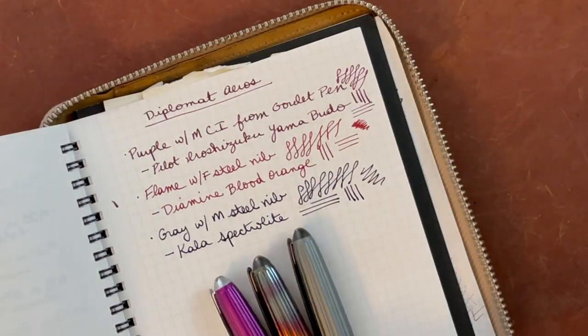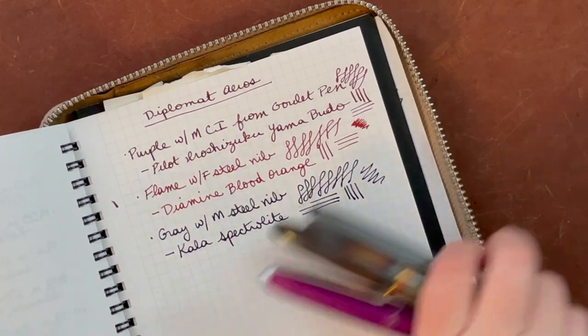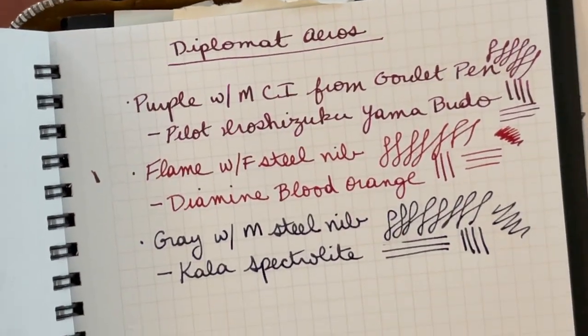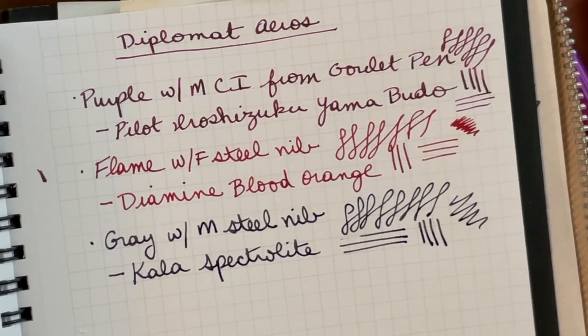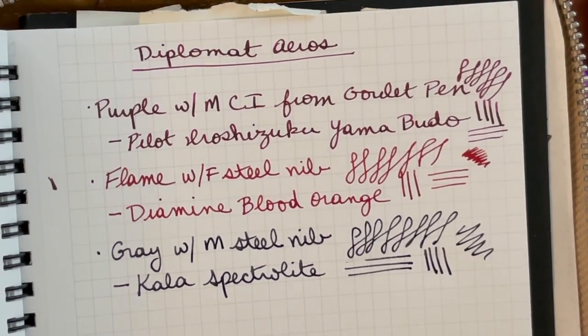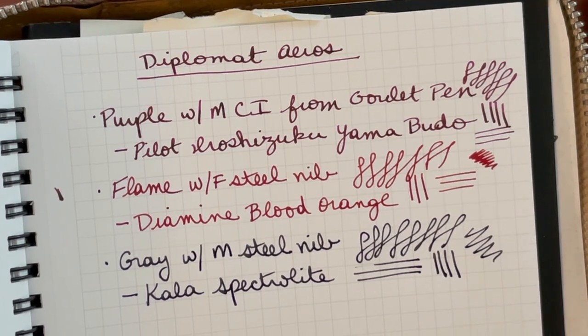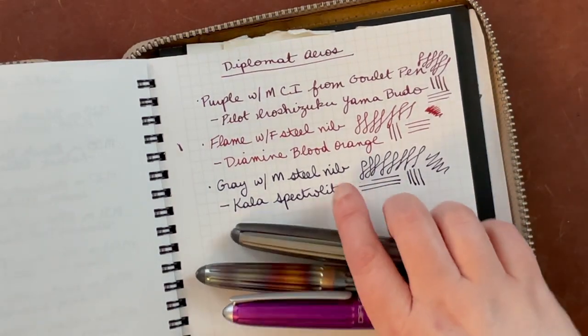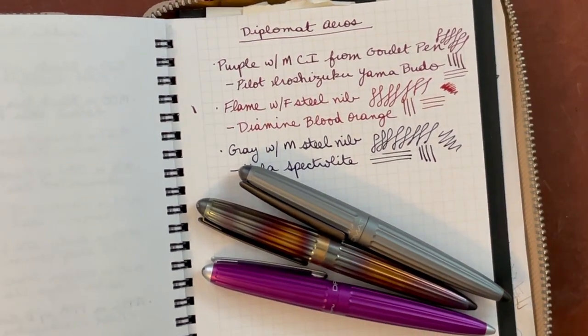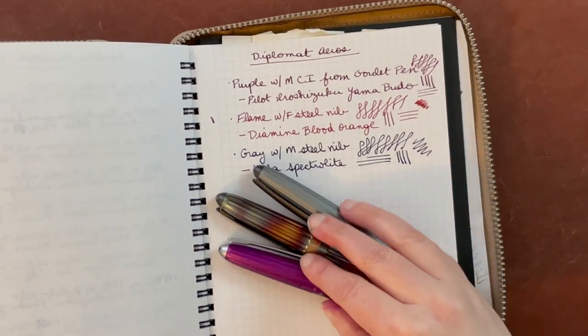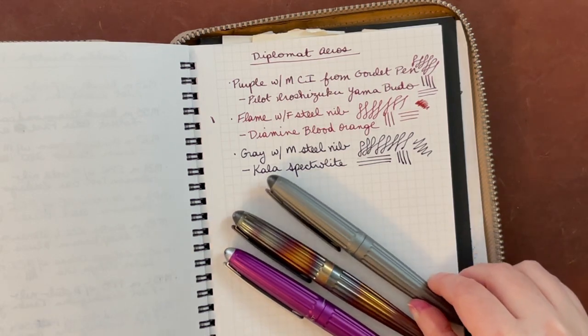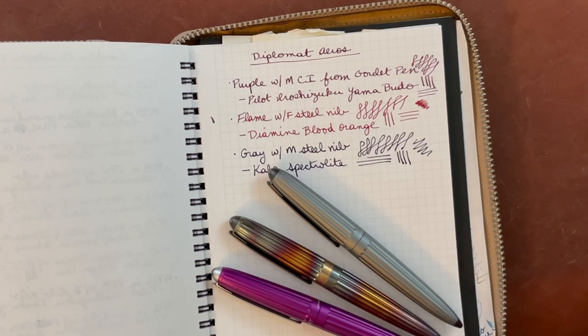Those are these three lovely Diplomat Aeros. They actually write fairly similarly between the three, even though one's a cursive italic. And I think the difference is probably mainly in the feel of the writing between these three, but you can tell some differences. But I don't feel like I need any more of these Aeros, but I do like having this little bit of variety. And I would say it's one of my favorite steel nibbed pens, just because the nibs are tuned so well and they write so smoothly.